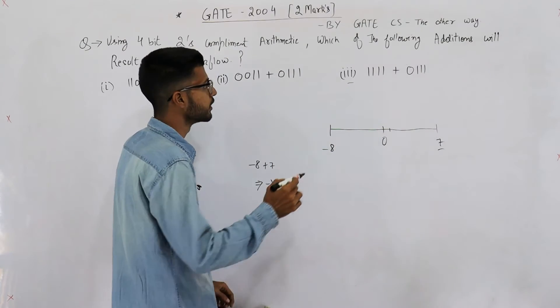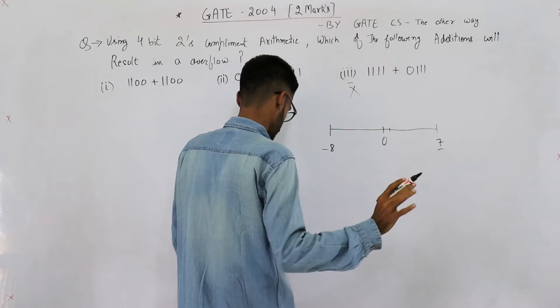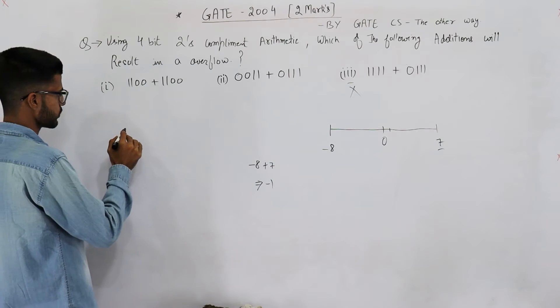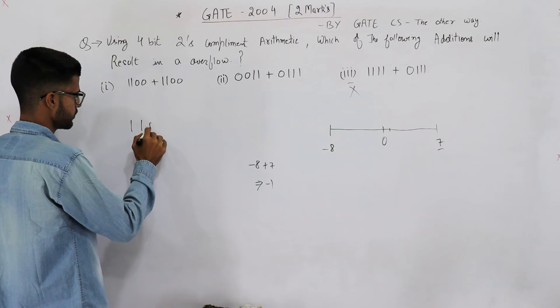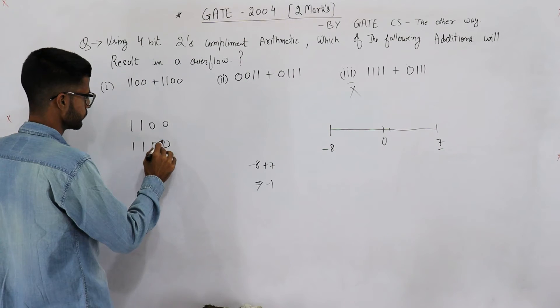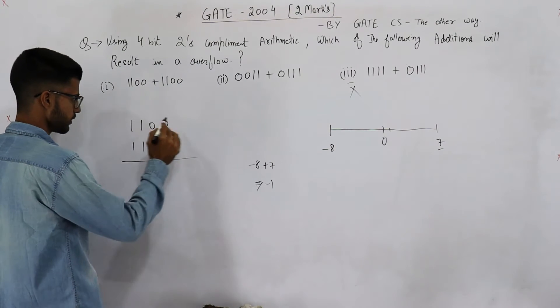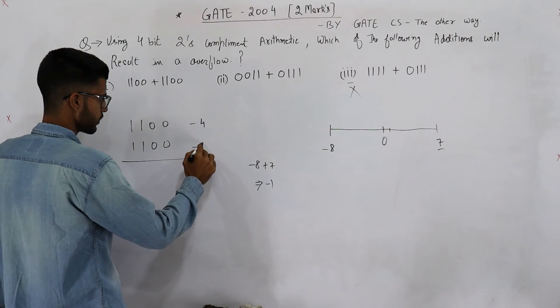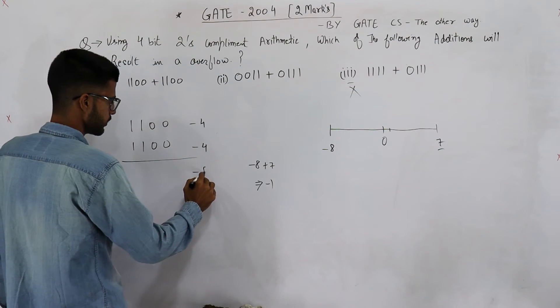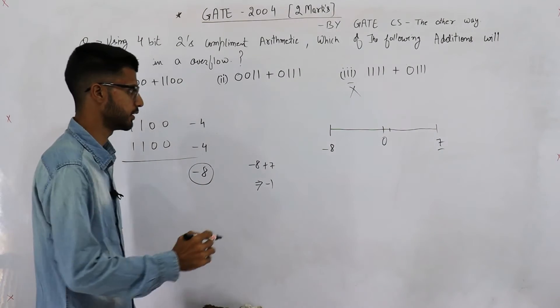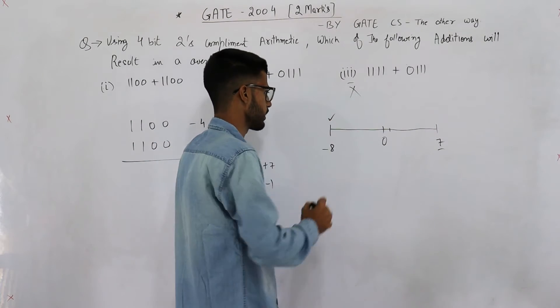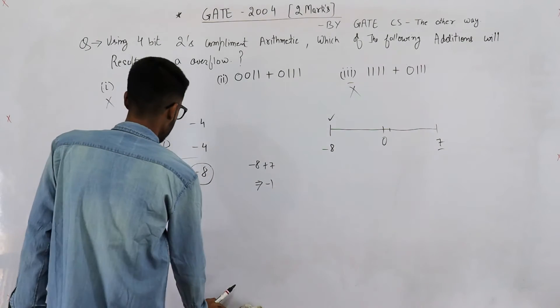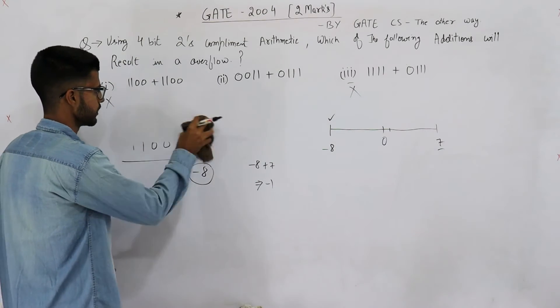Similarly, if we take any positive number and add any negative number to it, we are going to remain in this range only. That means this cannot cause an overflow. Now let's see part A: we have 1100 + 1100. This is -4 and this one is also -4. You add them to get -8. Negative 8 still remains in the range, so there is no overflow in part A also.